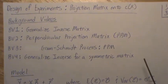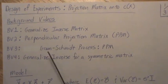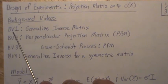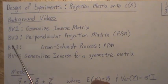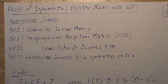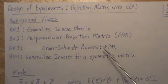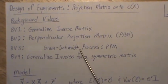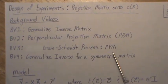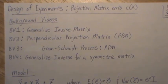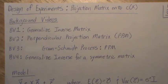Four background videos that we're going to reference quite a bit are: BV1 - Generalized inverse matrix, BV2 - Perpendicular projection matrix, BV3 - The Gram-Schmidt orthogonalization process, and BV4 - Generalized inverse for a symmetric matrix.